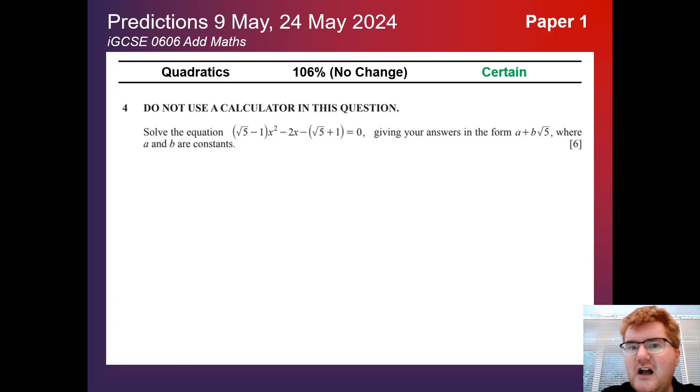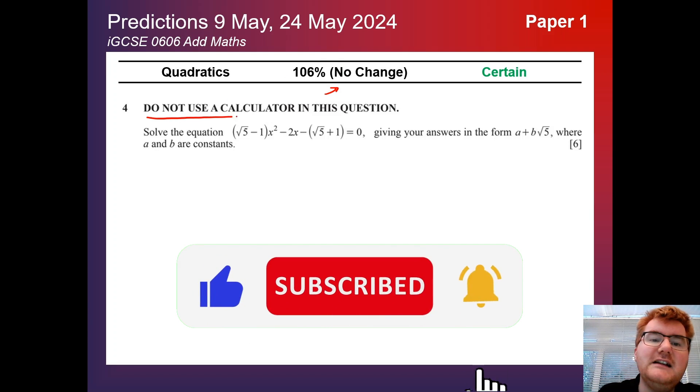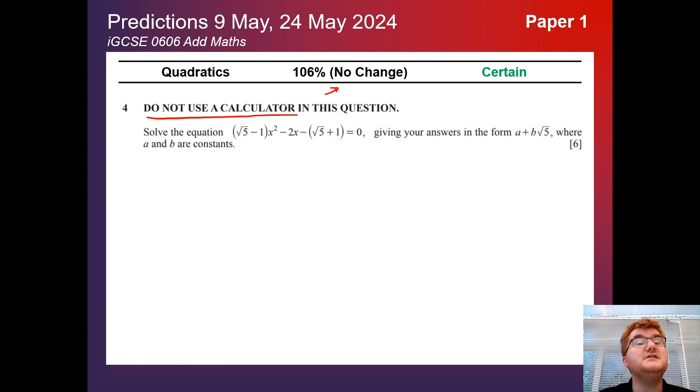Quadratics, also no change at 106%. Often part of the do not use a calculator style question, but they're also testing you on your use of surds as well. So be aware you can't rely on your calculator. You need to show that working, but you can check with the calculator.